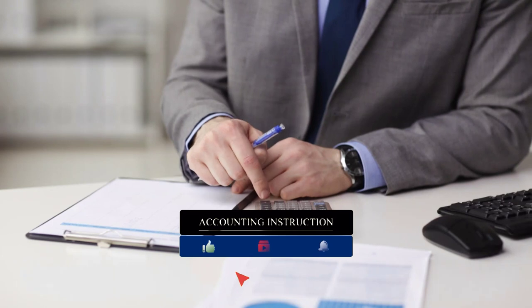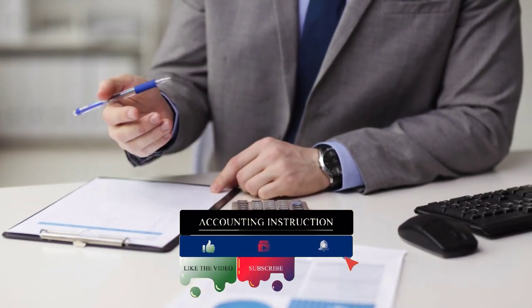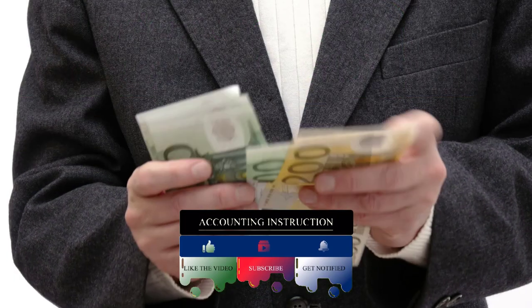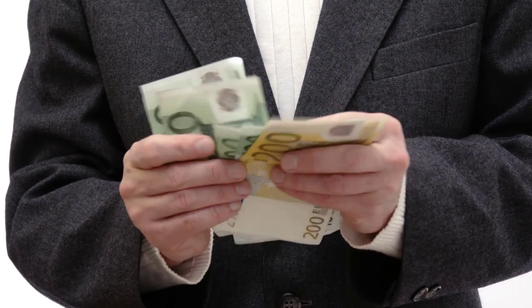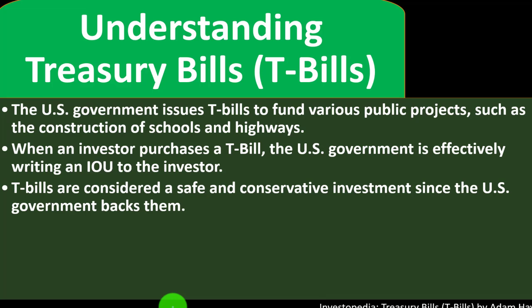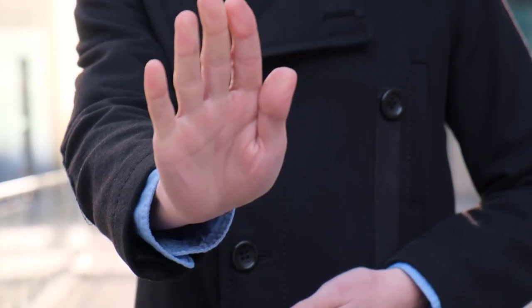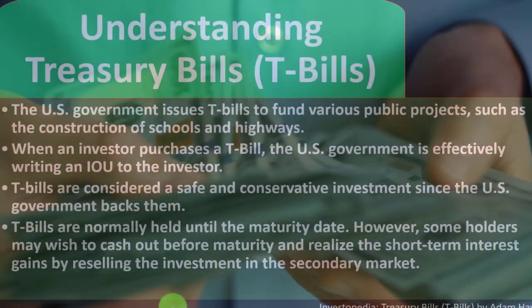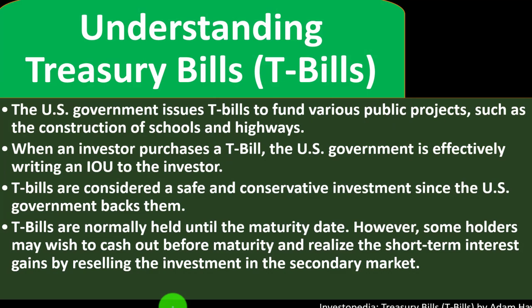Getting a T-bill means you're giving the government money. They give you a promissory note — in essence, a Treasury Bill — promising repayment, with the amount possibly being higher than what you loaned them, the difference being interest. T-bills are considered a safe and conservative investment since the U.S. government backs them. T-bills are normally held until the maturity date, but some holders may wish to cash out before maturity and realize short-term interest gains by reselling the investment in the secondary market.